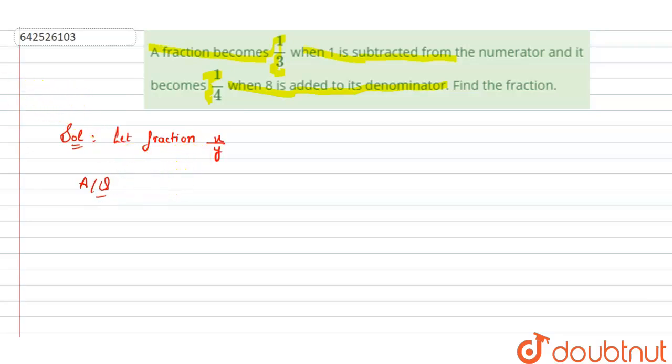Now what is given according to question? It is given that a fraction becomes 1 by 3 when 1 is subtracted from the numerator. So subtracting 1 from numerator, what we are getting is x minus 1 by y equals 1 by 3. This is our first equation. And second part says it becomes 1 by 4 when 8 is added to the denominator. That means x by y plus 8 equals 1 by 4. This is our second equation.